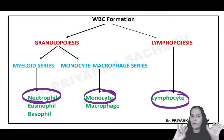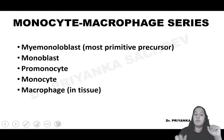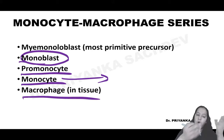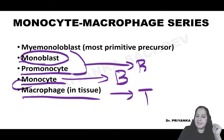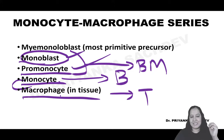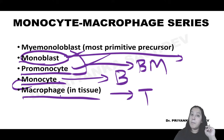How monocytes are formed: from hematopoietic stem cell → monoblast → pro-monocyte → monocyte. Monocyte comes into the blood; when it goes to tissue it is known as macrophage. Monocyte and macrophage are the same cell - in blood it is monocyte, in tissue it is macrophage. In bone marrow the two precursors are monoblast and pro-monocyte. In some leukemias - monoblastic leukemias - monoblast will come into the blood, which is not normal.